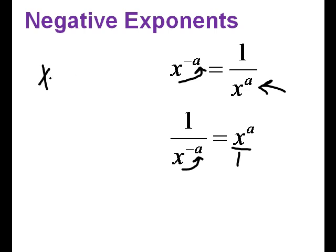So let's say I had x to the negative 2. That would be the same as 1 over x squared. Remember, I could write this as over 1. So what's happening is, if it's a negative exponent in the top, it goes to the denominator.